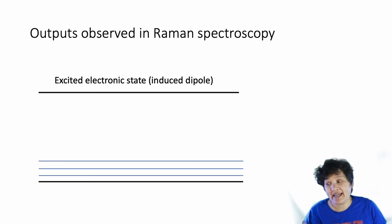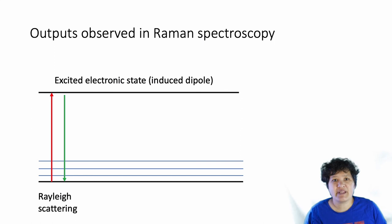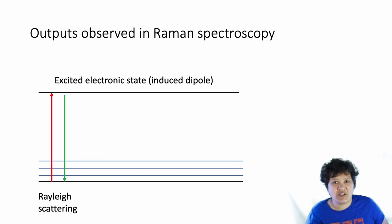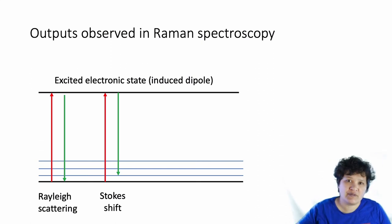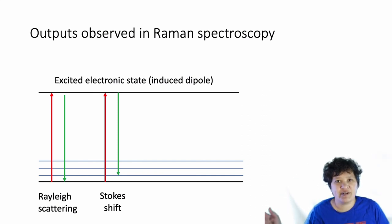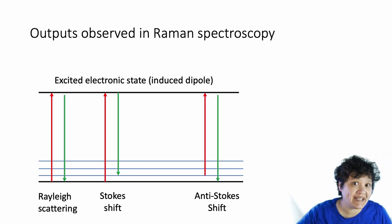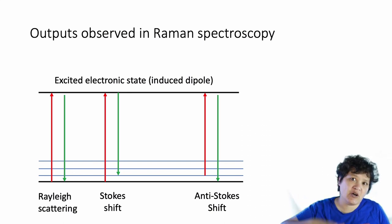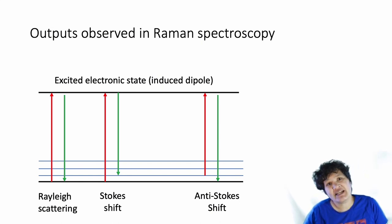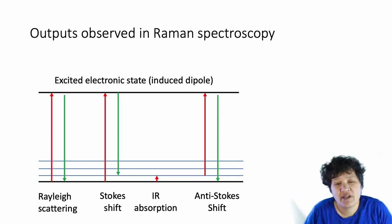You can put energy in and get the exact same energy out — that's called Rayleigh scattering, which accounts for most of what you get when you shine a laser on something. We screen that out because it's not what's interesting. There's what we call Stokes shift, where you put the molecule into an excited state with an induced dipole and it comes back not to the ground state but to an excited vibrational state. Then there's anti-Stokes shift, where the molecule is already in a vibrational state, goes up to the excited electronic state of the induced dipole, and comes back down to the ground state — ending at lower energy than where it started.